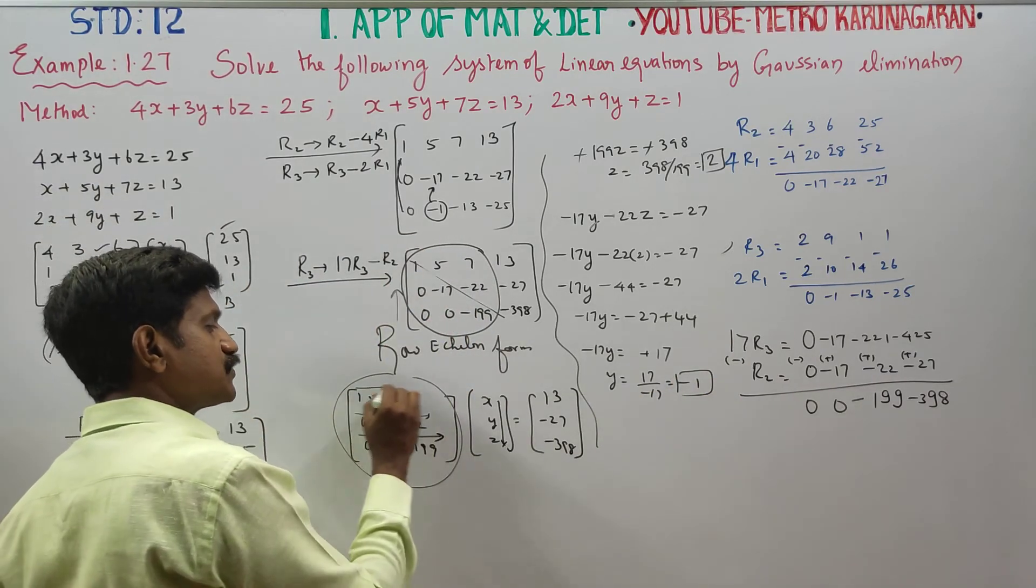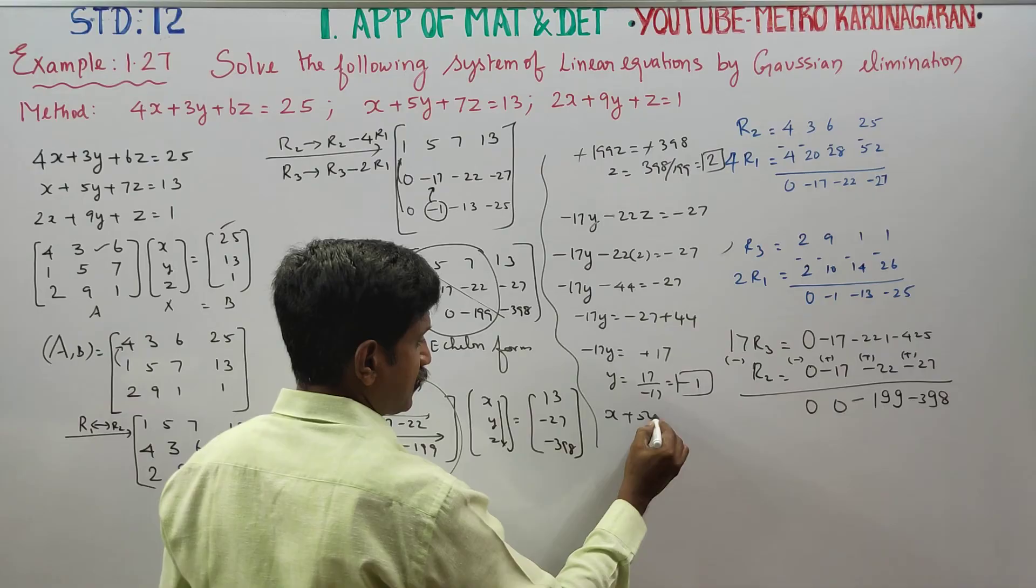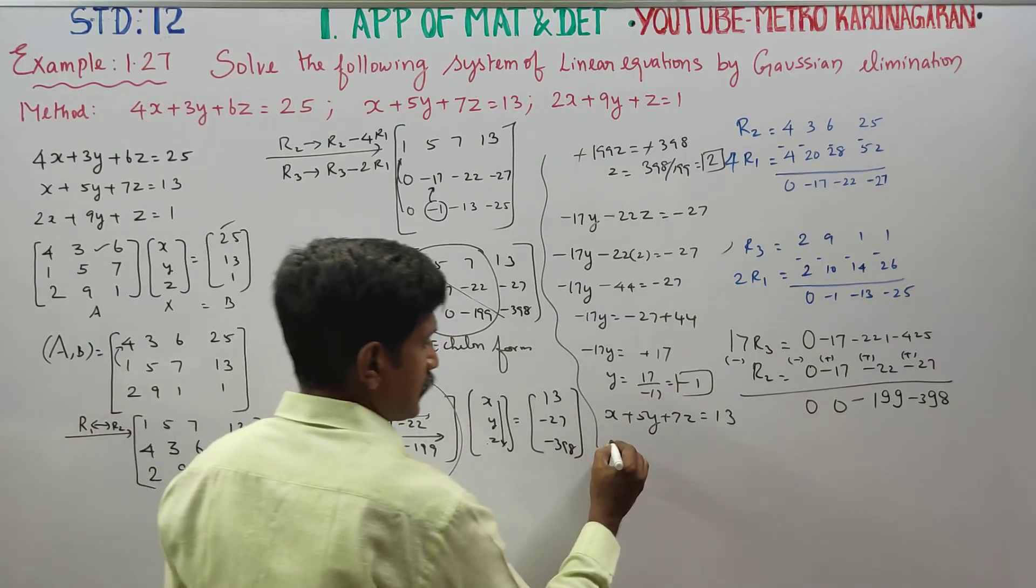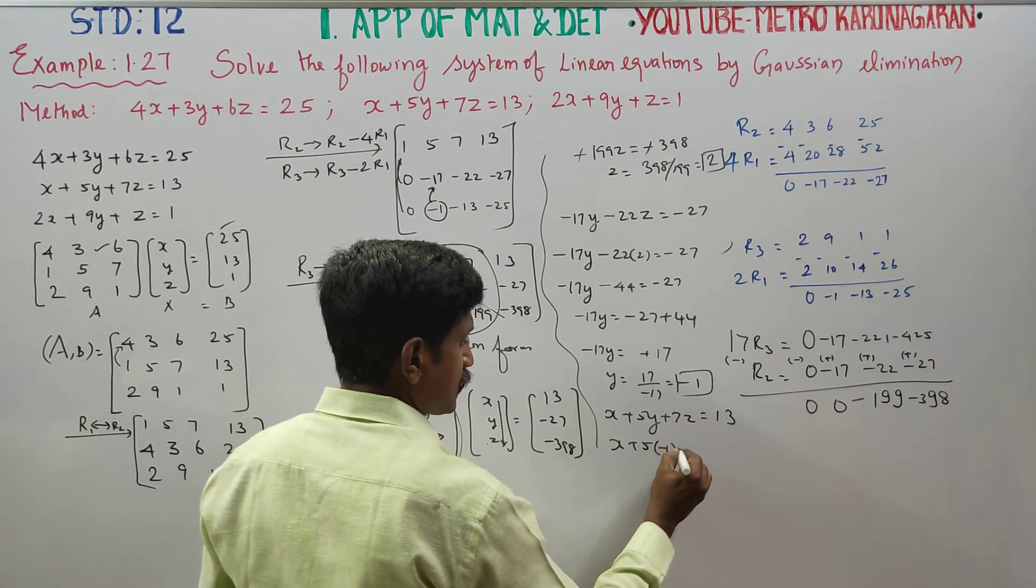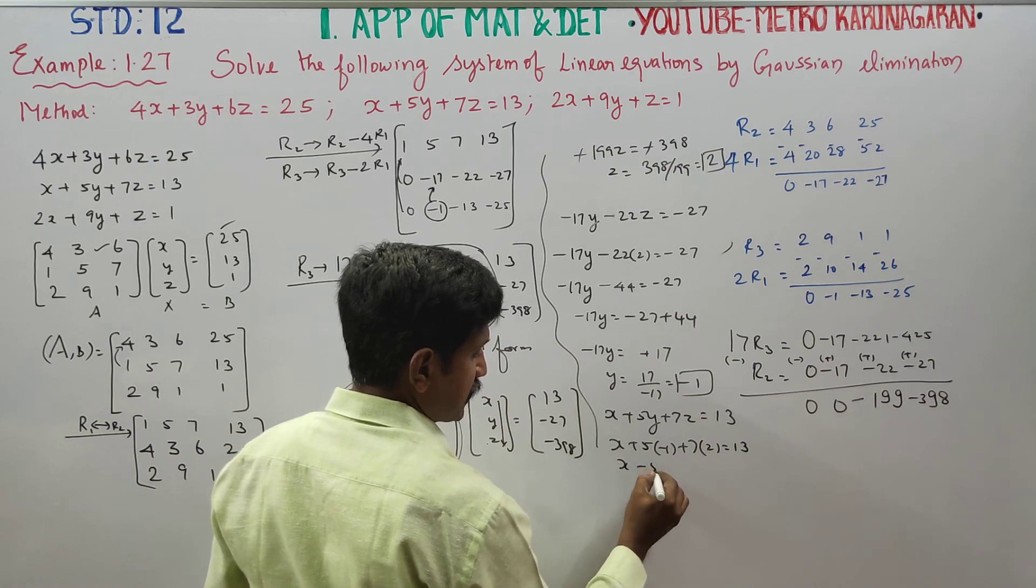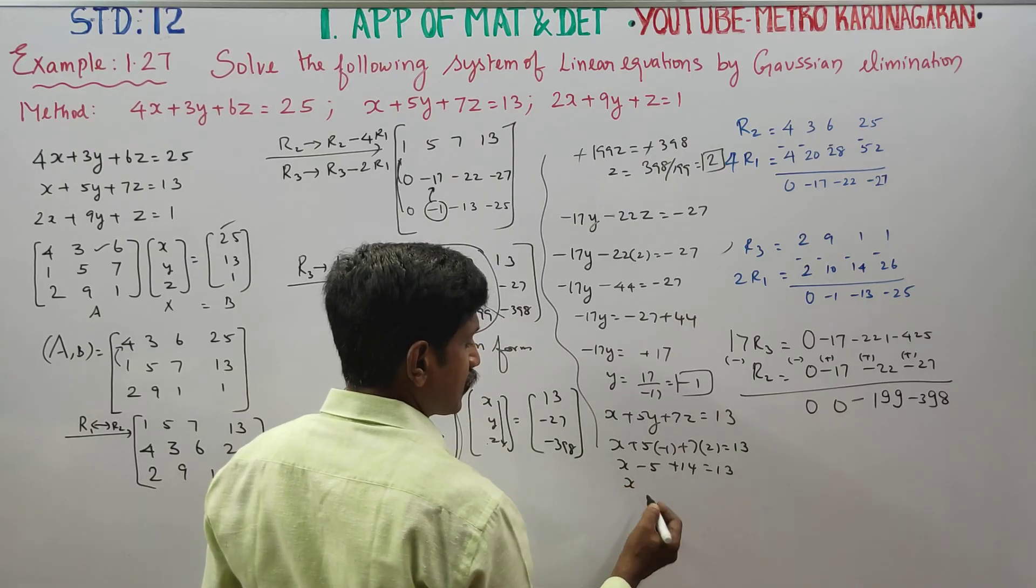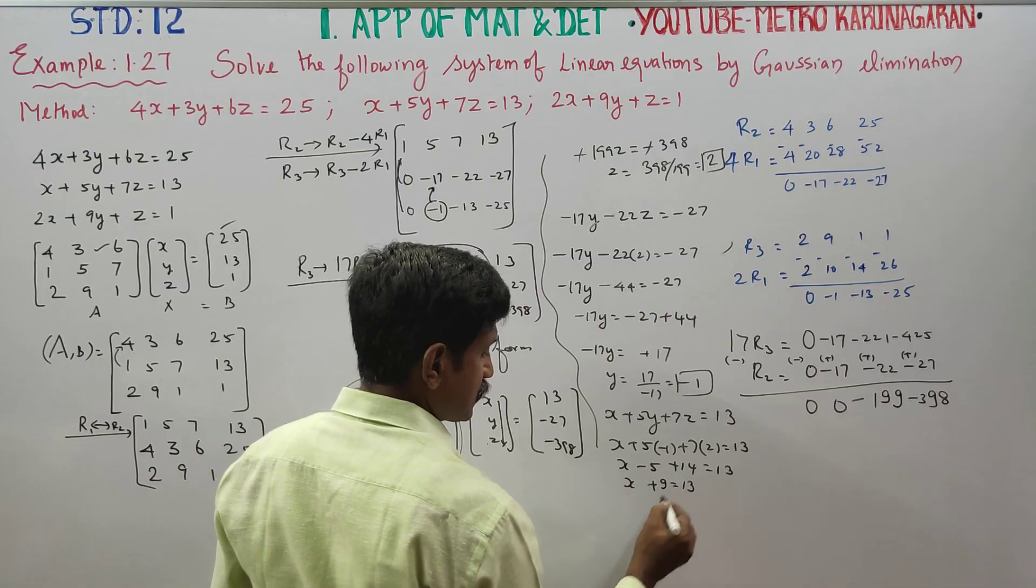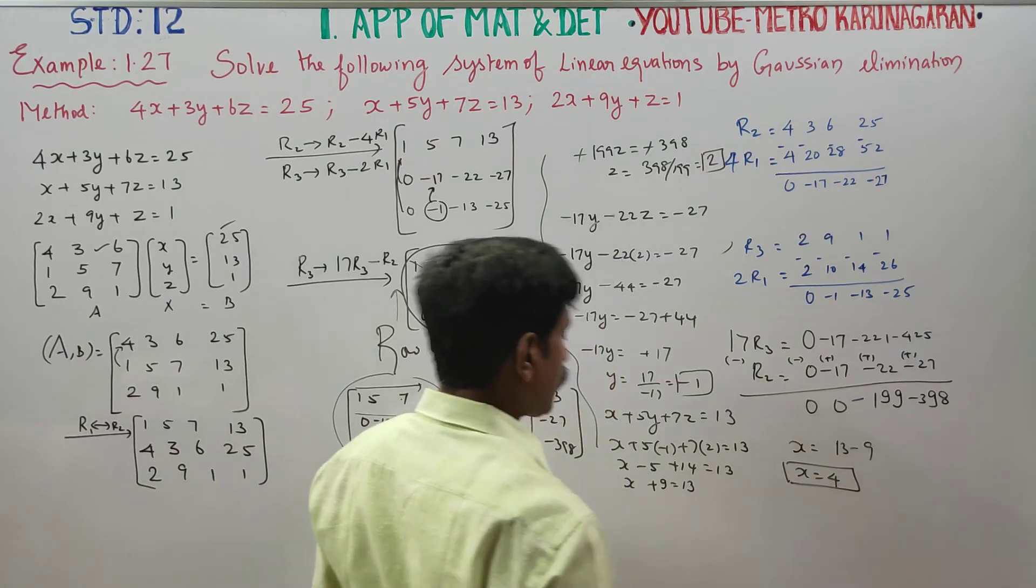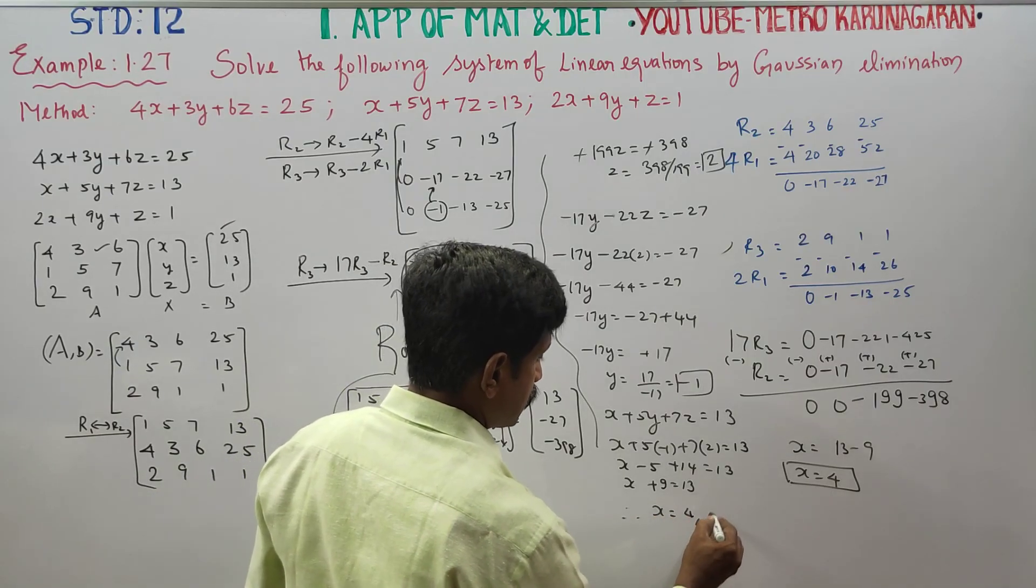After finishing this, back substitution. First row, first column. 1 into x plus 5 into y plus 7 into z is equal to 13. y value, they give you minus 1. z answer, they give you 2. x plus 5 times minus 1 plus 7 times 2 is equal to 13. x is equal to 13 minus 9. x is equal to 4. Now what is your final answer: x is equal to 4, y is equal to minus 1, and z is equal to 2 will be your final solution.